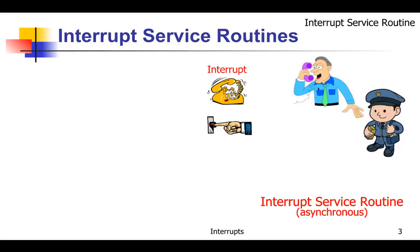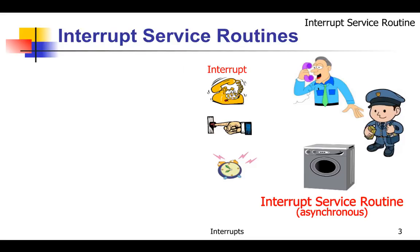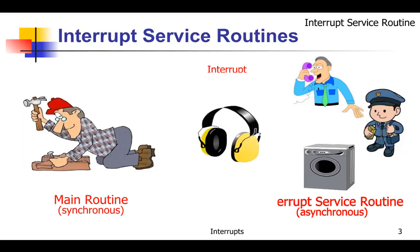The processor goes to the doorbell, checks to see what's there — the postman is there. It receives a package and goes back to work on the main process. Then another interrupt occurs: an alarm is going off, so it turns off the dryer, gets the clothes out, folds them, and goes back to the main routine. If the main routine has something extremely important to do and can't be interrupted, it puts on earmuffs — you can disable interrupts in the processor, at least maskable ones.